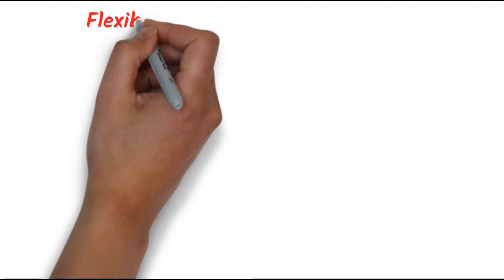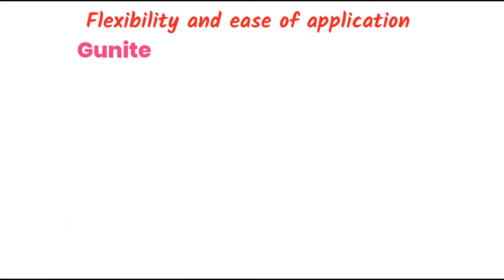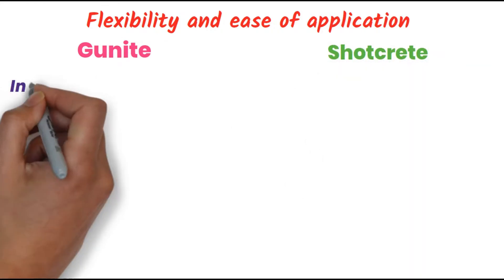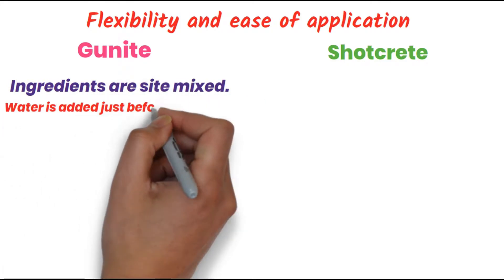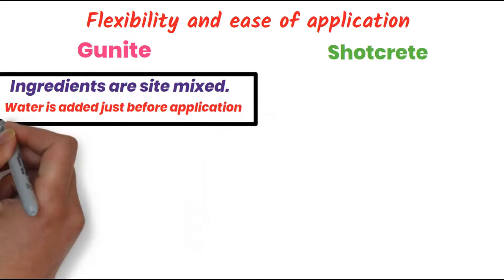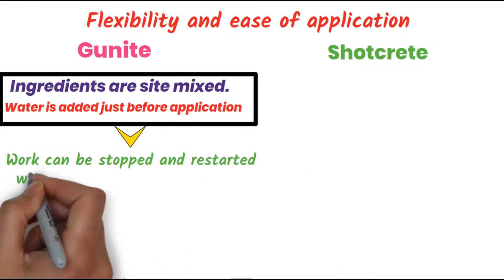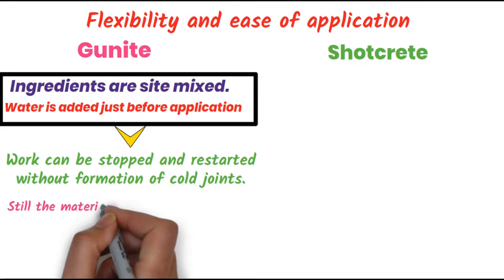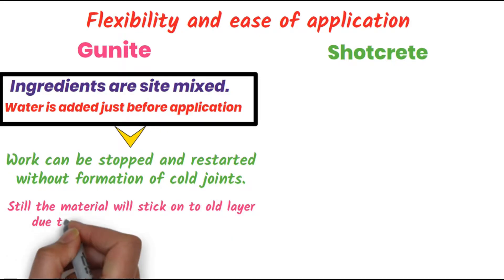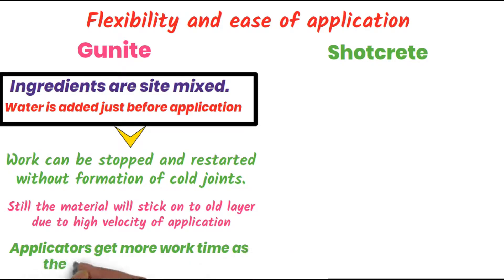Flexibility and ease of application of gunite and shotcrete. In the case of gunite, the ingredients are dry-mixed and water is added just before application. Because of that, work can be stopped and restarted without forming a cold joint. Even after stopping the work, the material will still stick to the old layer due to the high velocity of application. The applicators get more work time as the mixing is done at the site.